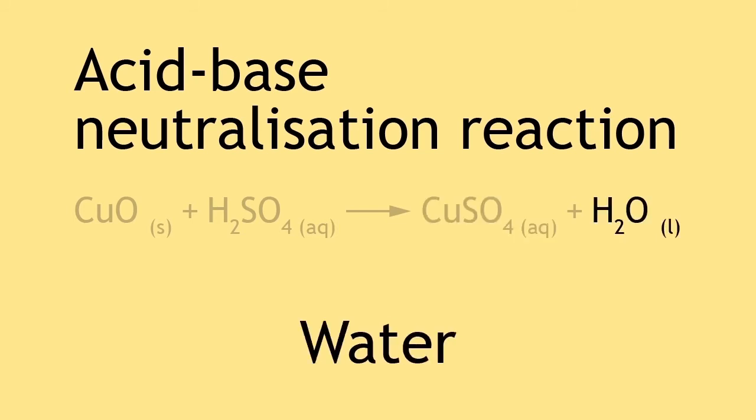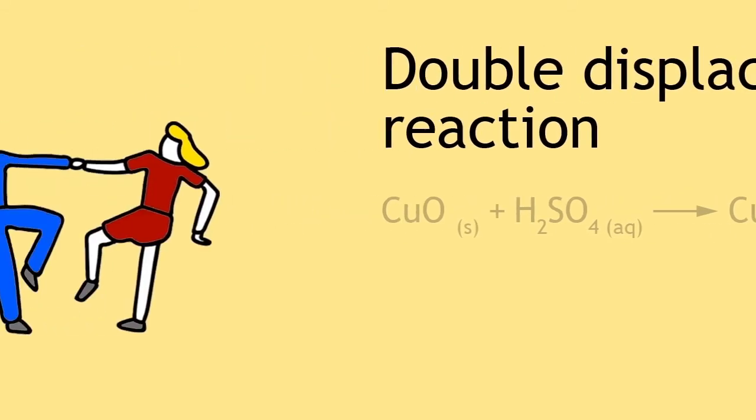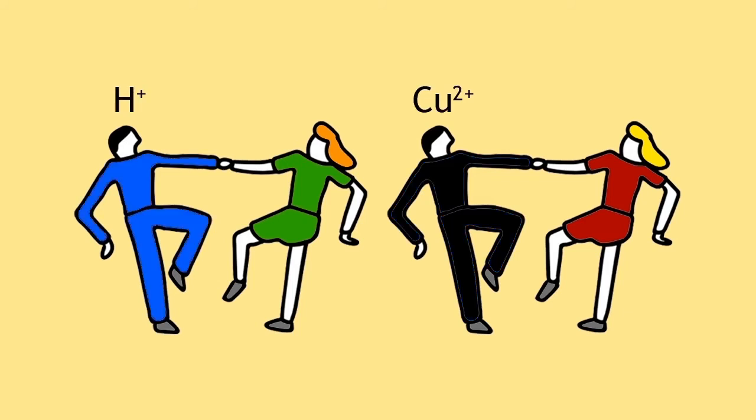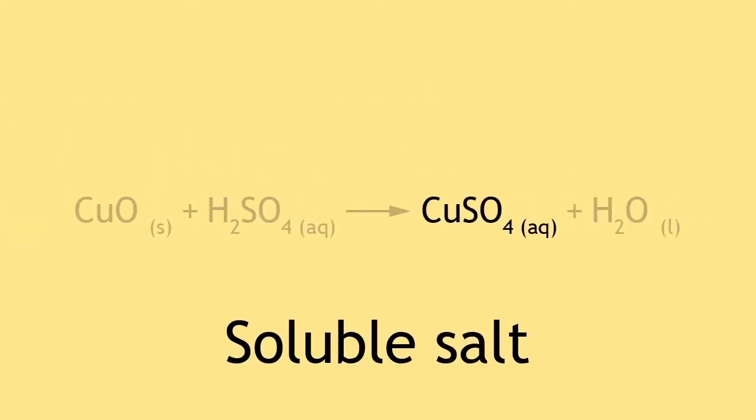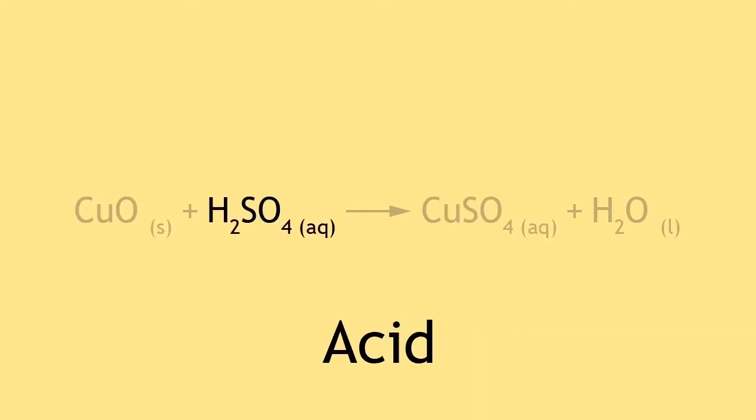An acid-base neutralization reaction is a type of double displacement reaction. The copper and hydrogen ions have switched, much like how certain dancing partners can switch. Therefore, a soluble salt can be made by reacting an insoluble base with an acid.